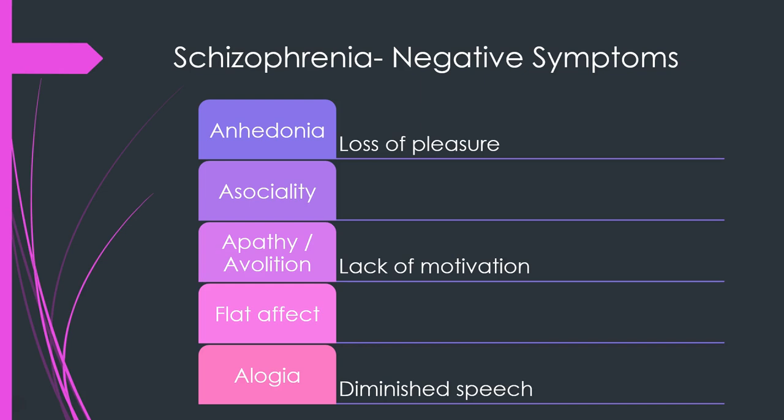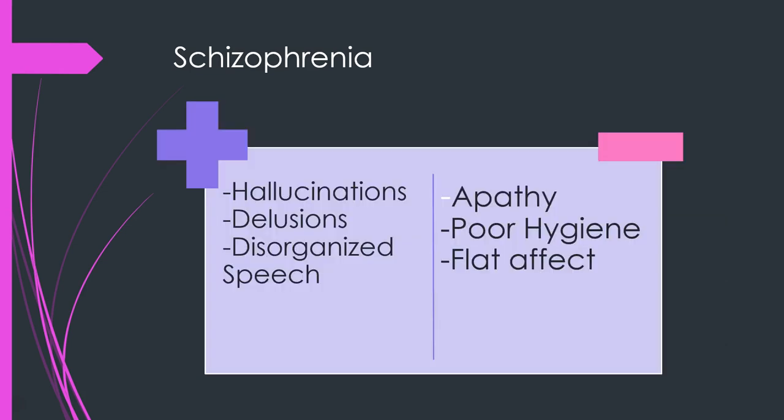Other examples of negative symptoms include anhedonia (loss of pleasure), being asocial, avolition or lack of motivation, flat affect, and alogia — diminished speech.